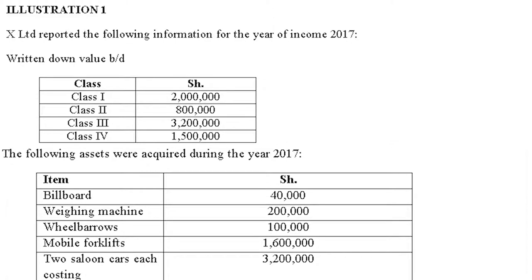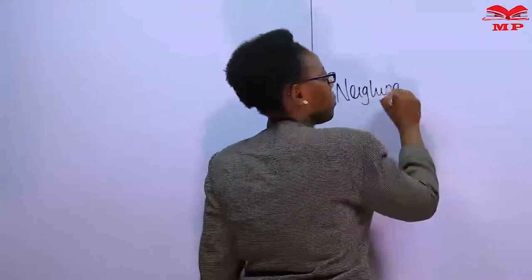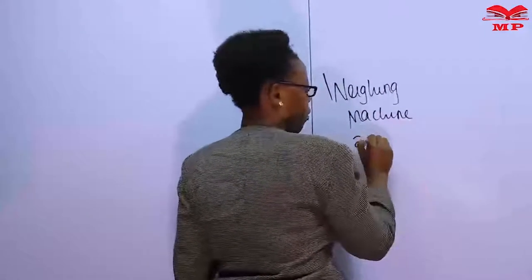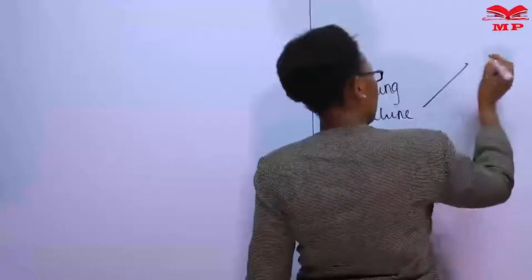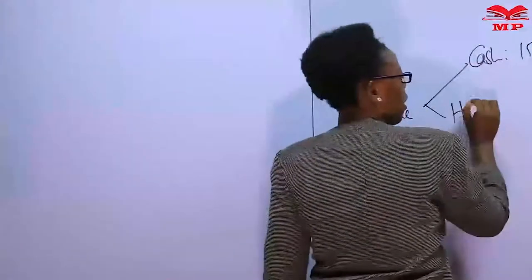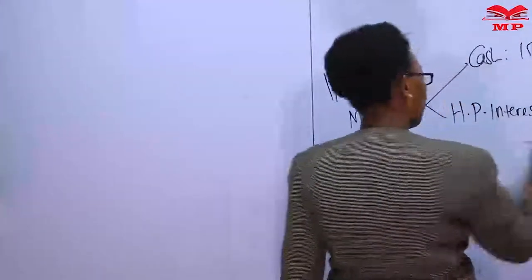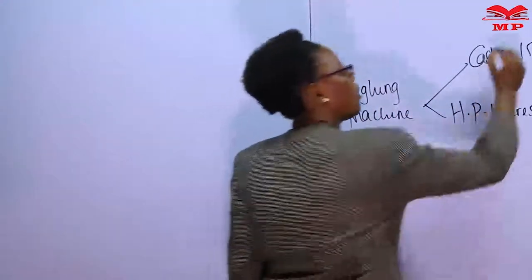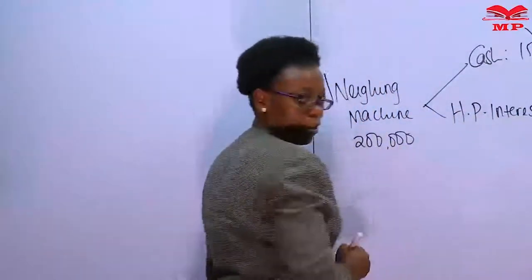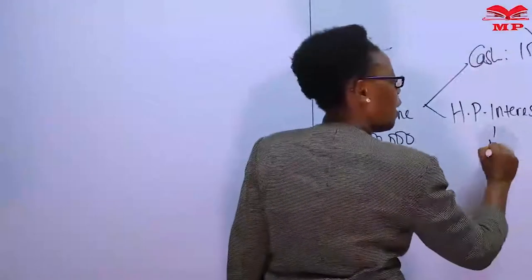When an asset is acquired on hire purchase terms, you can split the cost. For this weighing machine, the total cost of 200,000 is split into the cash price of 150,000 and hire purchase interest of 50,000. Adding the two: 150,000 plus 50,000 equals 200,000. For tax purposes, the qualifying cost for addition is the cash price of 150,000. The weighing scale is non-self-propelling, so it goes to Class 4. The hire purchase interest of 50,000 is an allowable deduction separately.